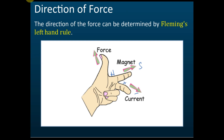Let me show you — the index finger and the middle finger are at right angles, the thumb and the index finger are also at right angles, and the thumb and the middle finger are also at right angles. If you view it from the side, you'll find they are at right angles as well. So these three fingers are all at right angles to each other.